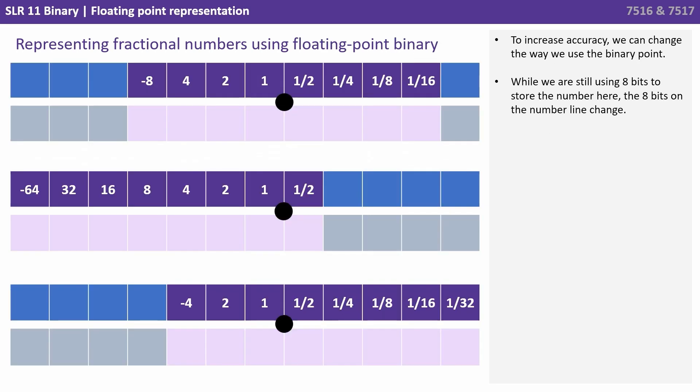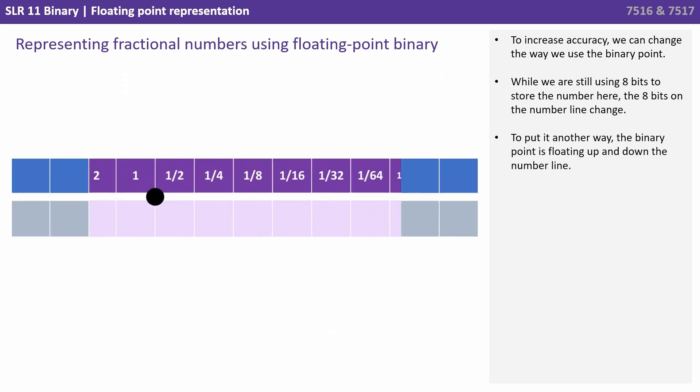To increase accuracy, we can change the way we use the binary point. While we're still using 8 bits to store the number here, the 8 bits on the number line change. To put it another way, the binary point is floating up and down the number line.